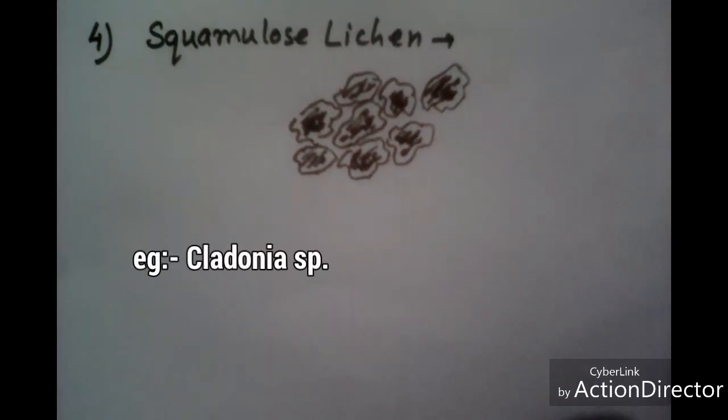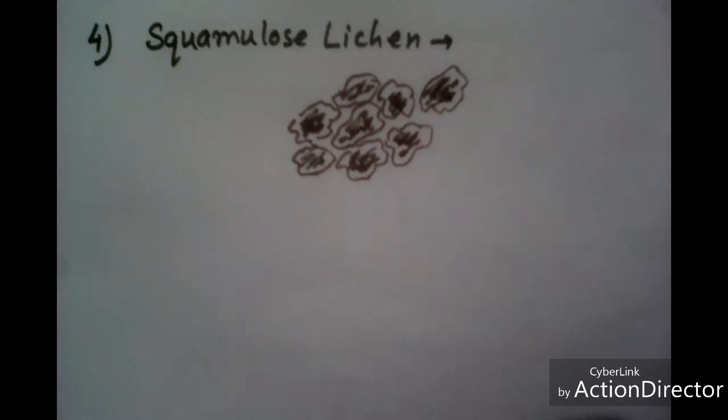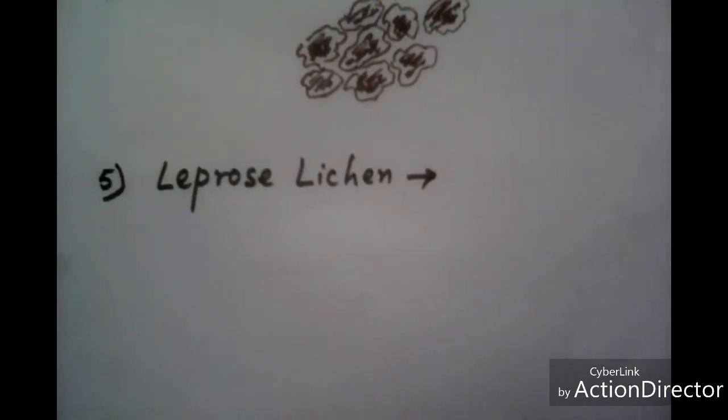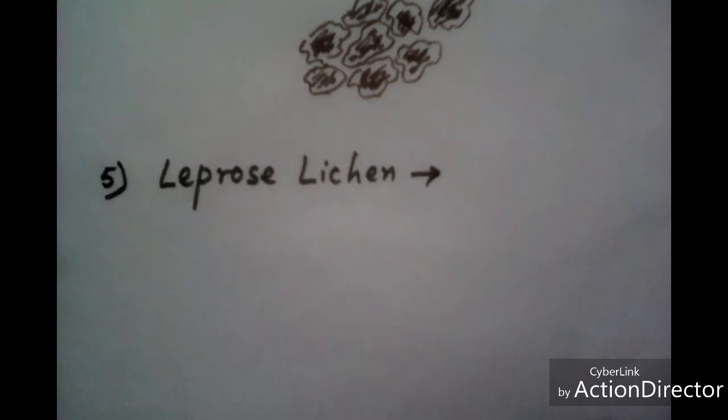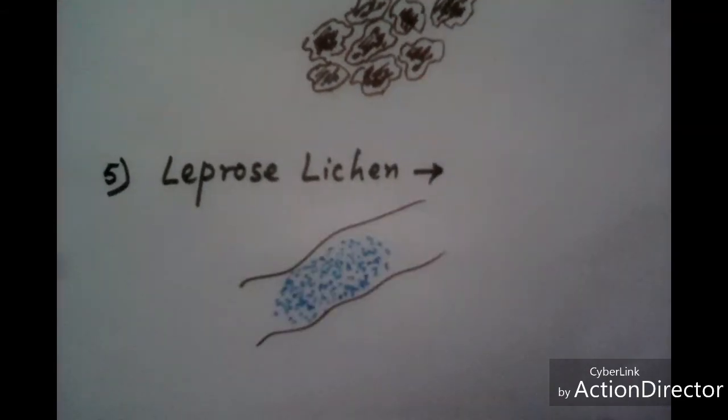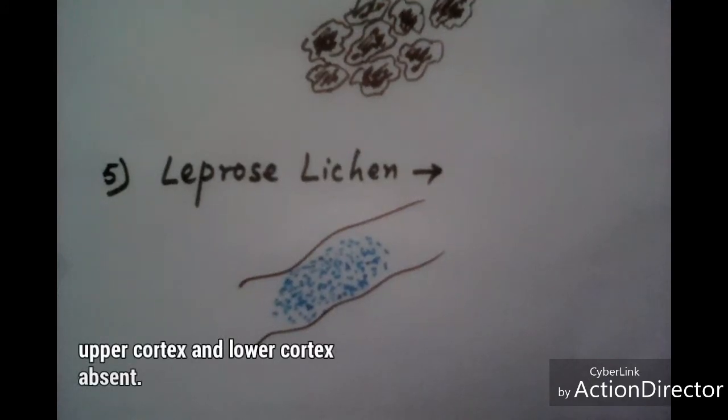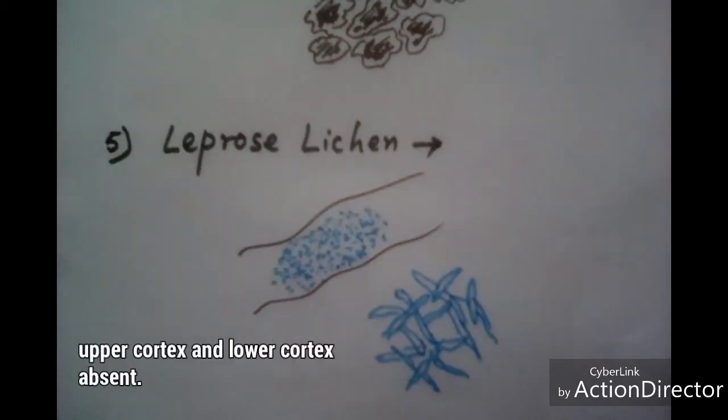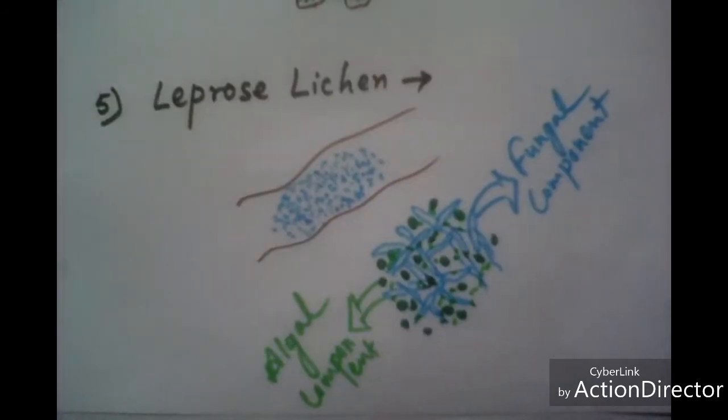Now the last type of thallus is leprose lichen. This type of thallus body looks like powder, and in this type of lichen, outer cortex and lower cortex are absent. Only fungal component and algal component are found.